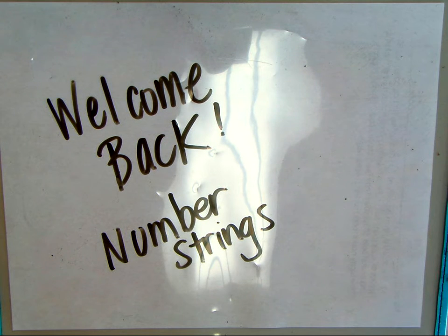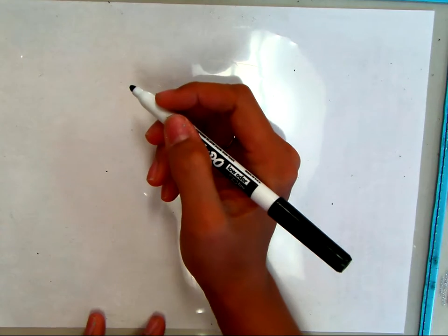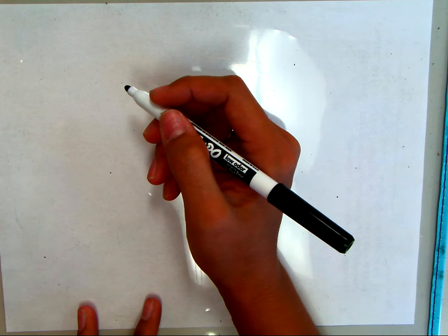Welcome back, families. This time we're going to take a look at number strings, which is another thing that we've been reviewing from second grade. A number string is when there are numbers strung together in an addition number sentence.